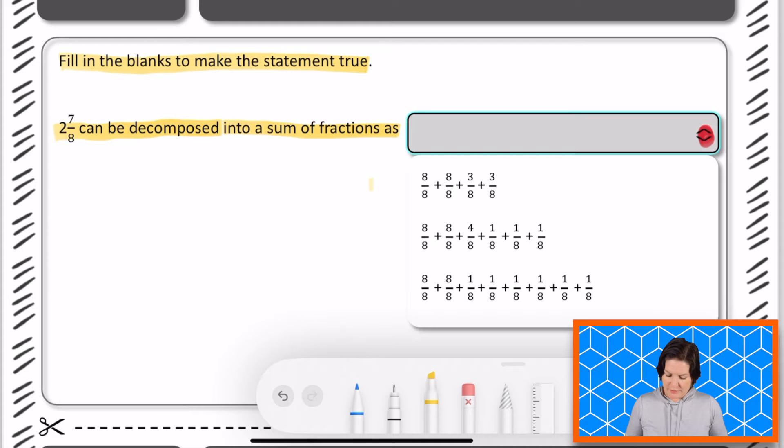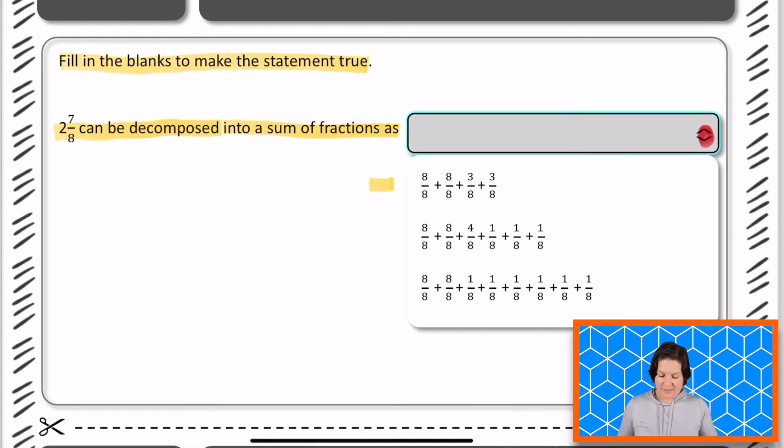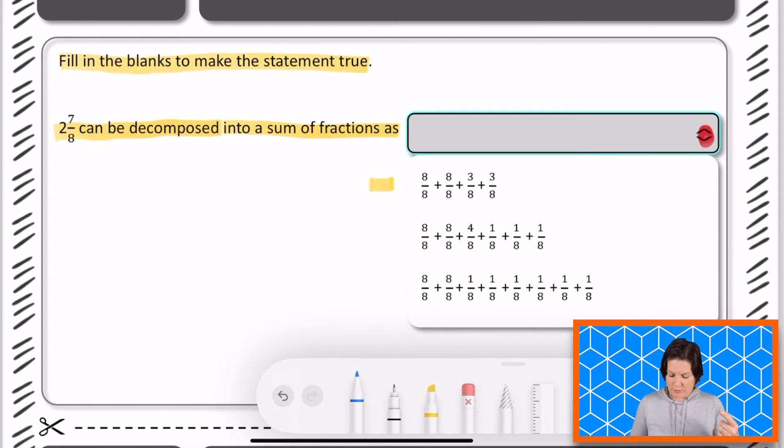And the very first one, this one right here says eight eighths, which is equal to one whole, plus eight eighths, which is equal to one whole, plus three eighths, plus three eighths, three eighths, and three eighths equals what? Six eighths.